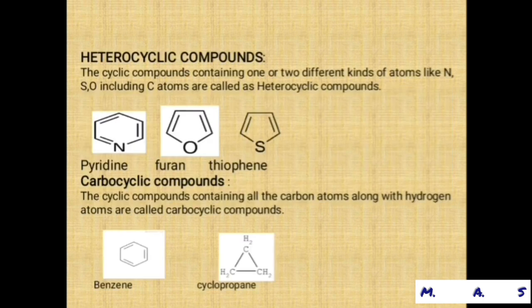First of all, what are heterocyclic compounds? The cyclic compounds containing one or two different kinds of atoms, like nitrogen, sulfur, oxygen, including carbon atoms, are called as heterocyclic compounds.